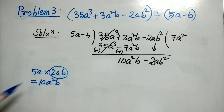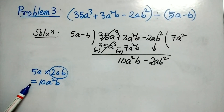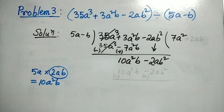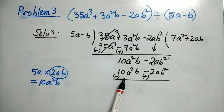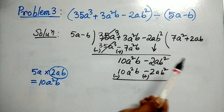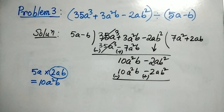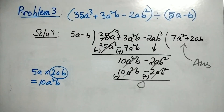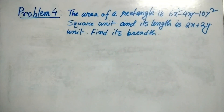If we multiply 5a by 2ab we get 10a squared b. So 2ab times 5a is 10a squared b, and 2ab times minus b is minus 2ab squared. After subtraction we get 0 as remainder, and therefore the answer is 7a squared plus 2ab. Let's go for a word problem.